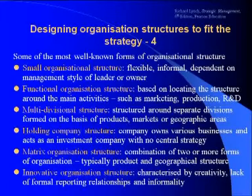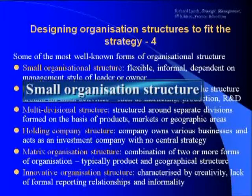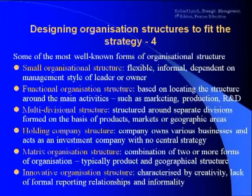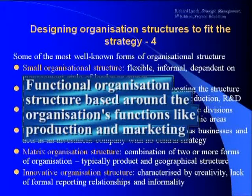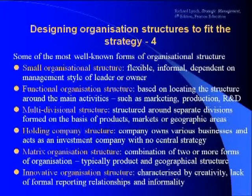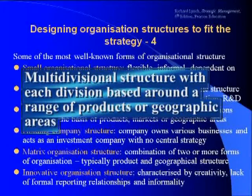There are six different types of organisational structure. Number one: the small organisation structure, which is self-explanatory. Number two: the functional organisation structure, which is mainly used in small and medium-sized companies for where you have one main product range. As organisations develop further ranges, it's often necessary to divisionalise, and this is the third organisational structure, where each division has its own functional structure — marketing, finance, production, etc.